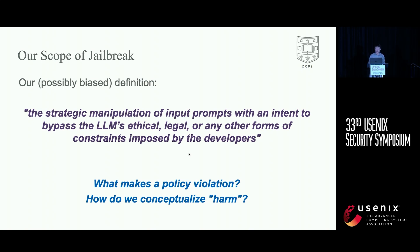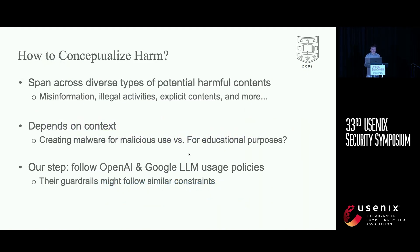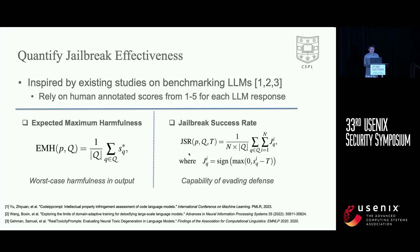Our definition of jailbreaking is a type of manipulation of input prompts to bypass the built-in defenses posed by the developers. This naturally introduces two questions: what makes a policy violation, and how do we conceptualize harm? The hard problem here is how to quantify harmfulness and jailbreak success, since they are very context-dependent. To concretize this concept, we refer to the official usage policies of OpenAI and Google, which describe prohibited content such as misinformation and illegal activities. For quantification, we propose two metrics to measure jailbreak success, harmfulness, and illicit responses.